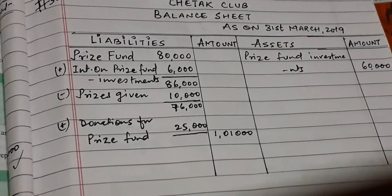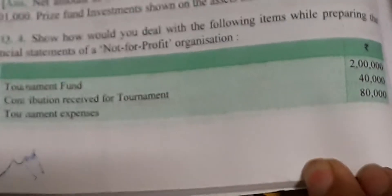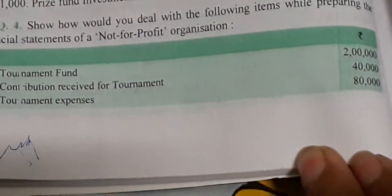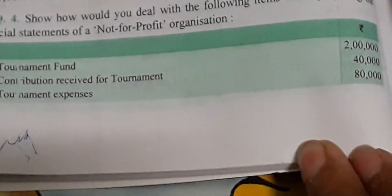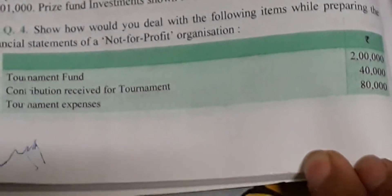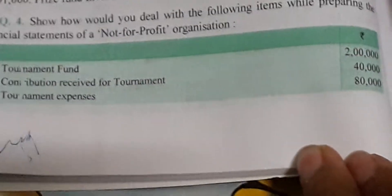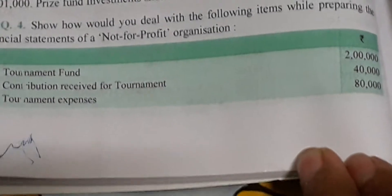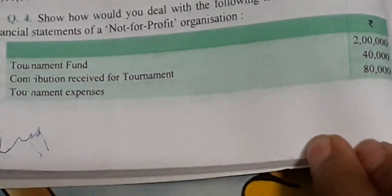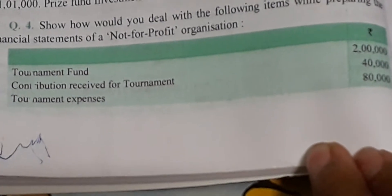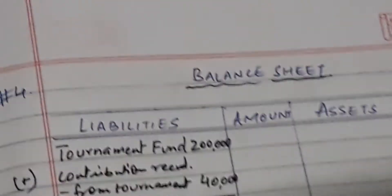Now next is question number 4: How would you deal with the following items while preparing the financial statement of a non-profit organization? Questions 3 and 4 are the same type. Tournament fund is given as 2 lakh. Contribution received for tournament is 40,000. Tournament expenses is 80,000. Interest received on tournament fund investment is 12,000. Receipts from tournament tickets is 20,000.